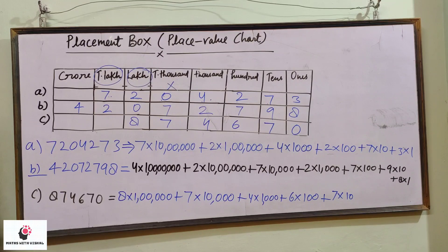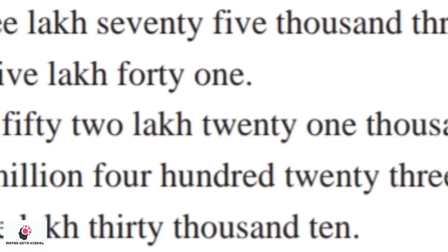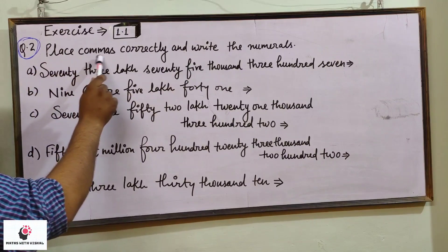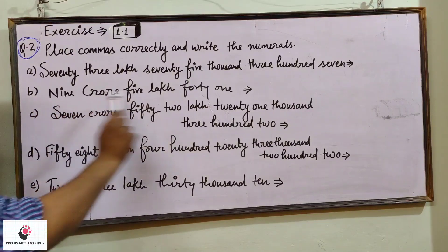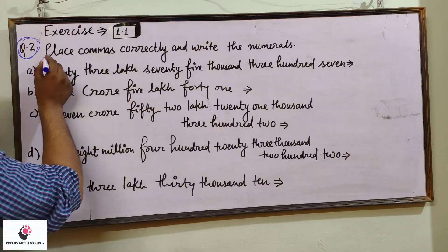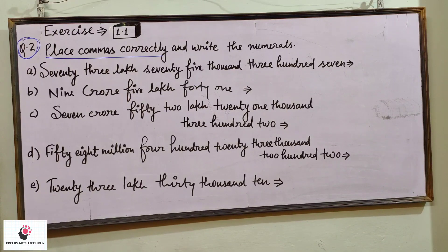Hope you have understood about the placement box and the place value chart. Now we shall solve the questions of Exercise 1.1. We have already done question number one, so now we shall understand questions number two, three, and four. Question number two asks us to place commas correctly and write the numerals for numbers written in words. You have to write the number in digits and place the comma correctly.